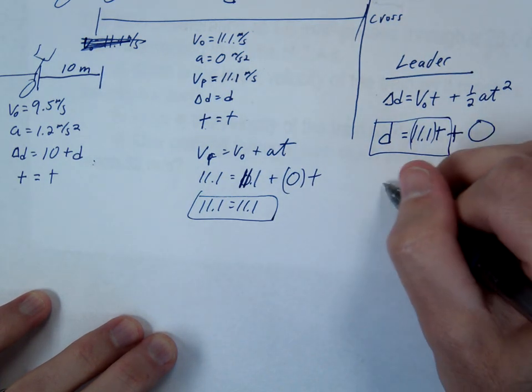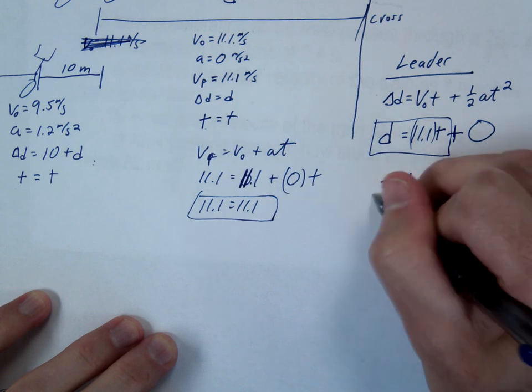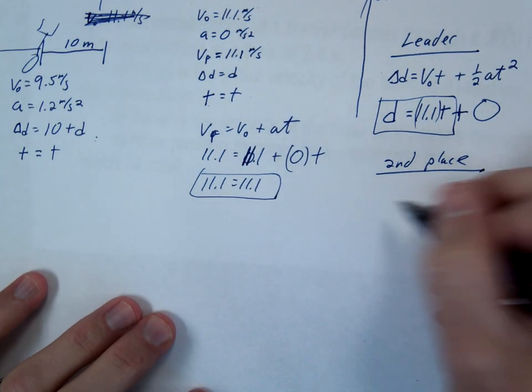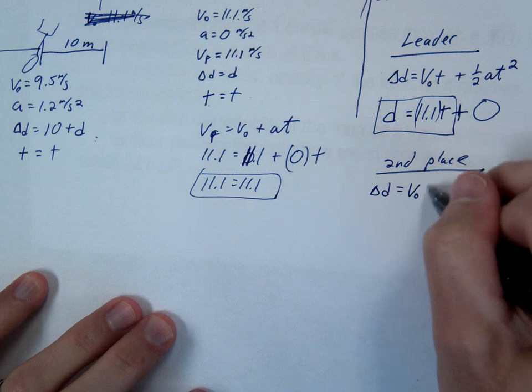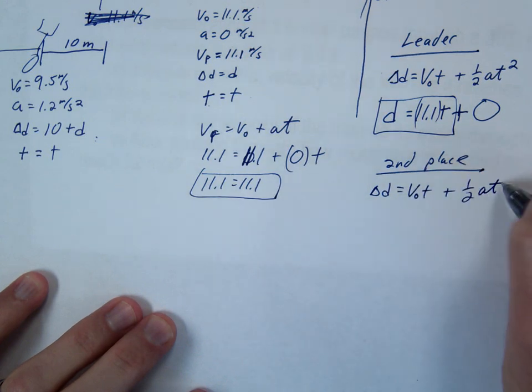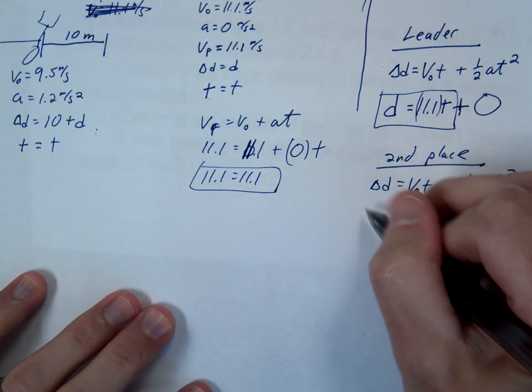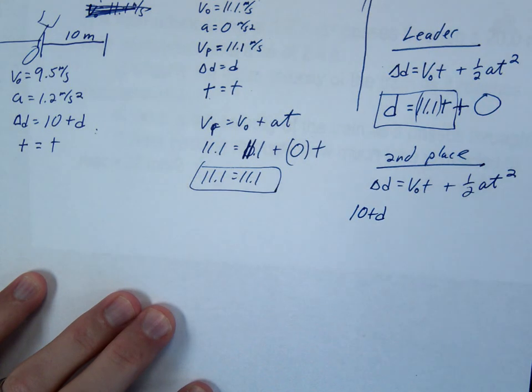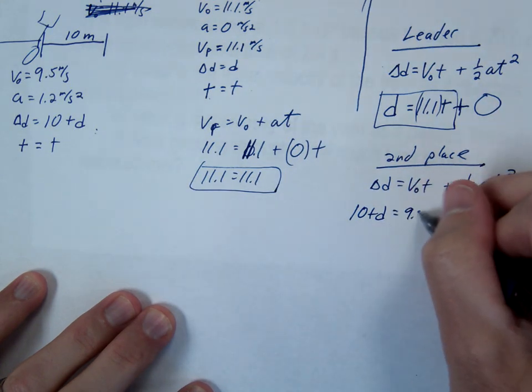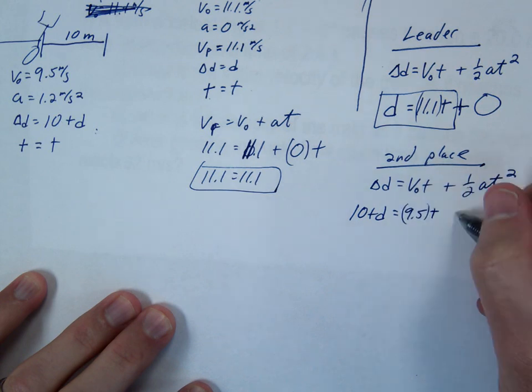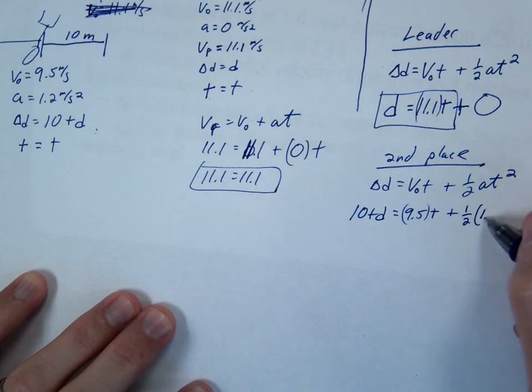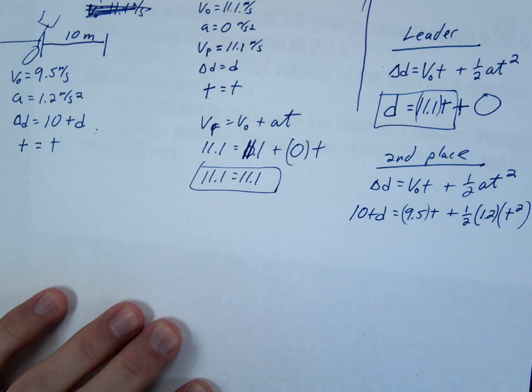We're going to do the same thing with second place guy. I'm going to just use the same equation. We're going to substitute the givens from him. So his delta d is going to be 10 plus d. His v initial is 9.5 times t plus one half his acceleration was 1.2. And we'll call this t squared.